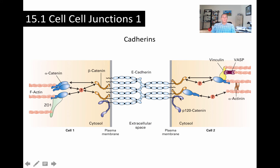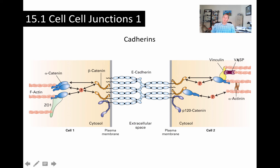There are some other proteins as well. There's one called P120-catenin, which can be involved in regulating the activity of the Rho protein, leading to reorganization of the actin cytoskeleton — we talked about Rho, Rac, and CDC42.